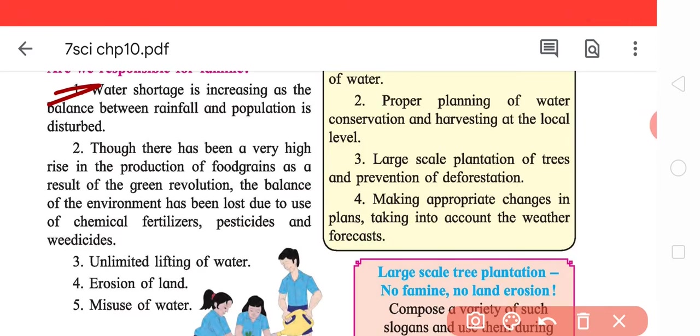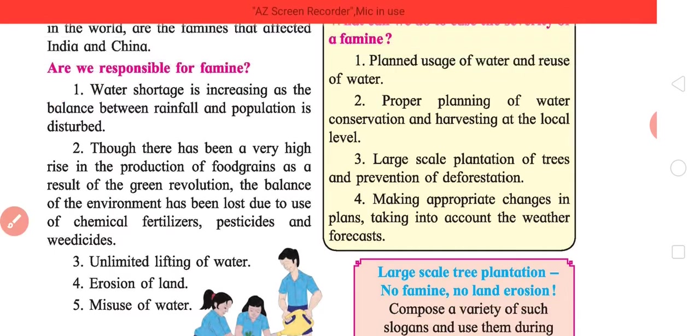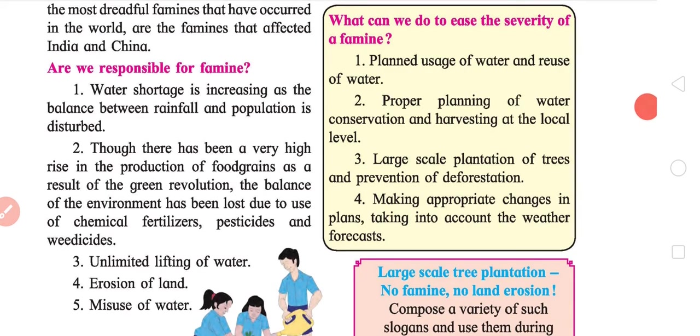Are we responsible for famine? Naturally so. Point one, water shortage is increasing as the balance between rainfall and population is disturbed. Point two, there has been a very high rise in the production of food grains as a result of green revolution. The balance of environment has been lost due to use of chemical fertilizers, pesticides and weedicides, unlimited lifting of water, erosion of land, and misuse of water.